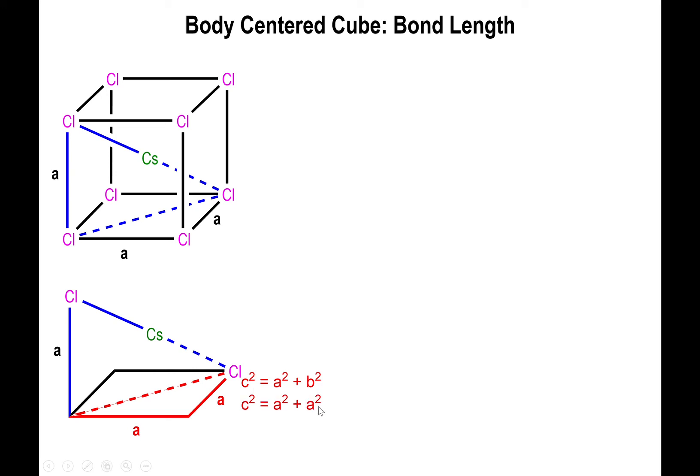That means that both sides are basically the same value, a and a. So c² is going to equal twice the value of a², and that in and of itself means that c, if you take the square root, is going to be the square root of 2 times a. So that's the value of the hypotenuse of the bottom face of the cube.